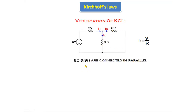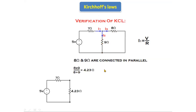For 8 ohms and 9 ohms connected in parallel, the formula is (8 × 9) / (8 + 9), which gives 4.23 ohms. We replace the 8-ohm and 9-ohm resistors with a single 4.23-ohm resistor. Redrawing the circuit, we have the 5-volt voltage source, the 7-ohm resistor as before, and the new 4.23-ohm resistor replacing the parallel combination.